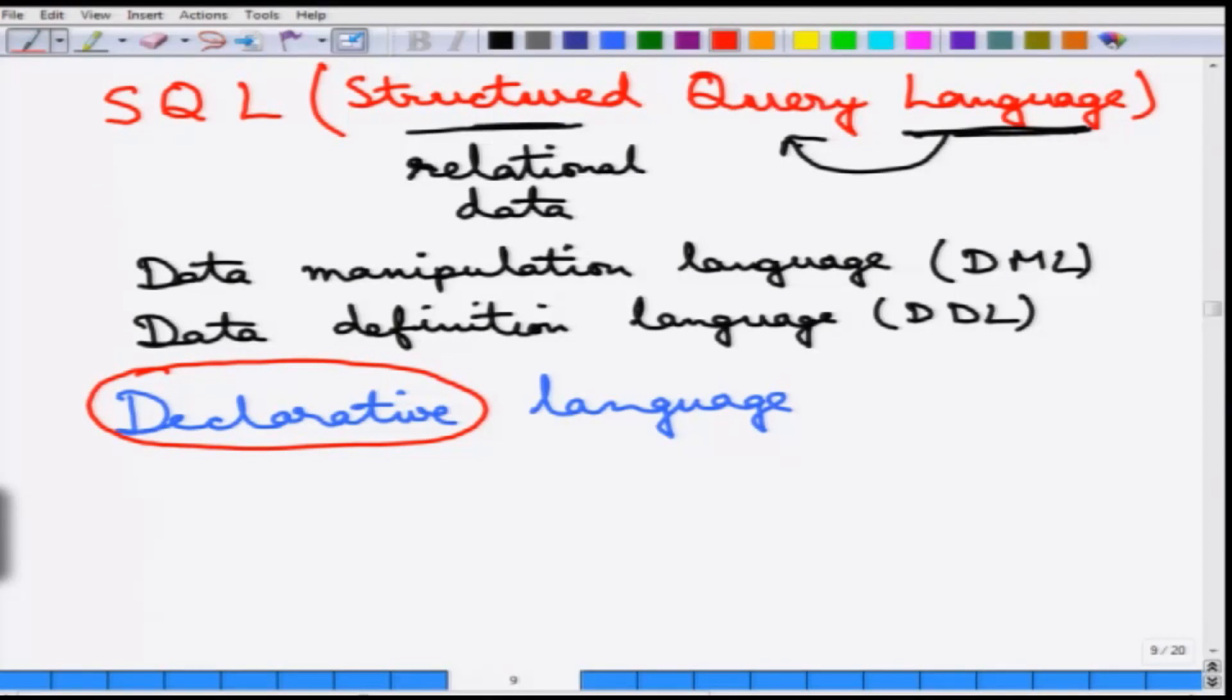A declarative language essentially means it lets you declare what you want to do. For example, in relational algebra, we just said select every tuple where the value of the attribute column A is 1, but it does not tell you how to select those. Should you go over the tuples one by one? Should you look at their attribute values or hash those attribute values? How it is being done? That is not said. Similarly in SQL, it is not specified how to do it, only what to do. You just declare the intent - what the query is supposed to be doing, what it is supposed to be returning and not how it is being done.